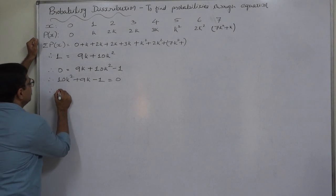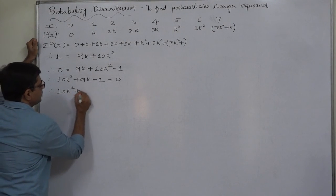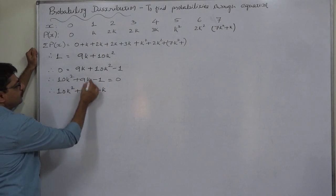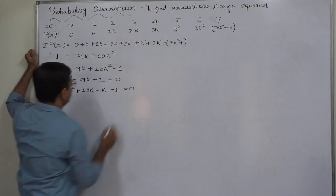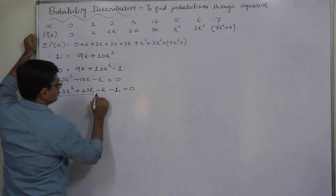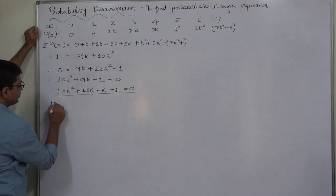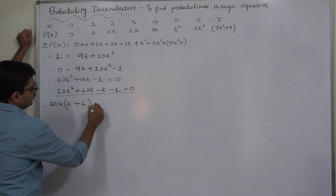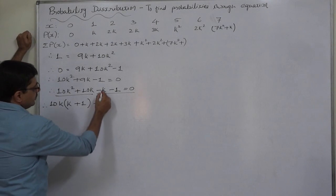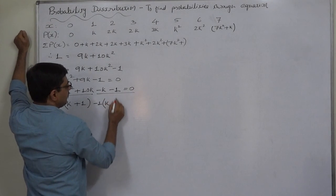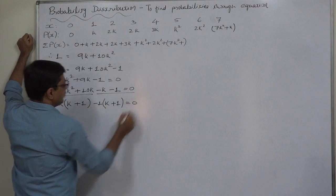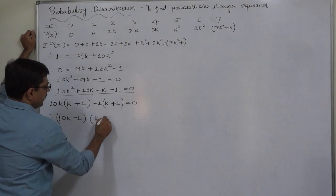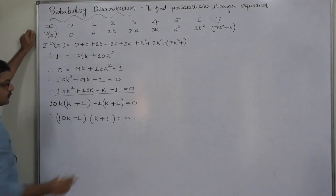We factor by splitting the middle term: 10K squared plus 10K minus K minus 1 equals 0. Taking 10K as a common factor gives 10K times (K plus 1). Then taking minus 1 as a common factor gives minus 1 times (K minus 1), yielding the factored form (10K minus 1)(K plus 1) equals 0.